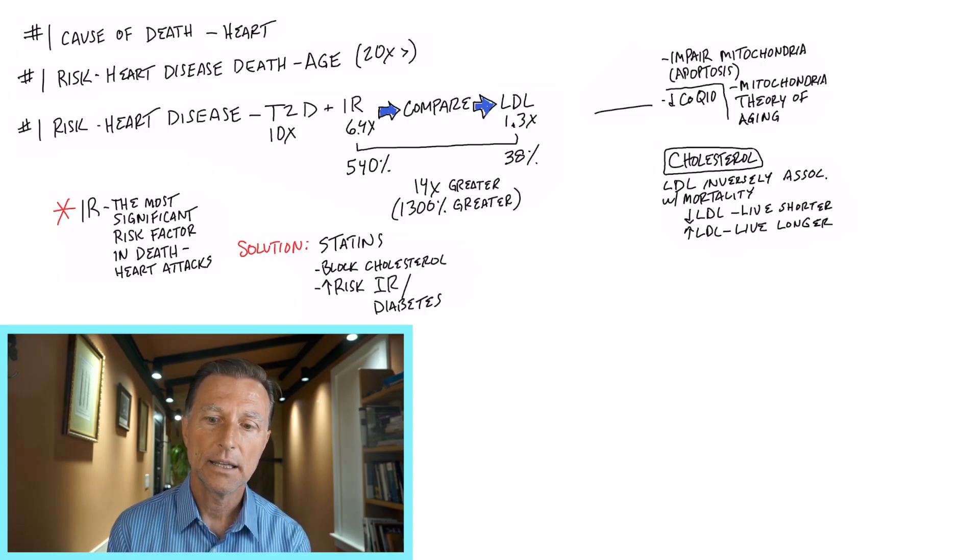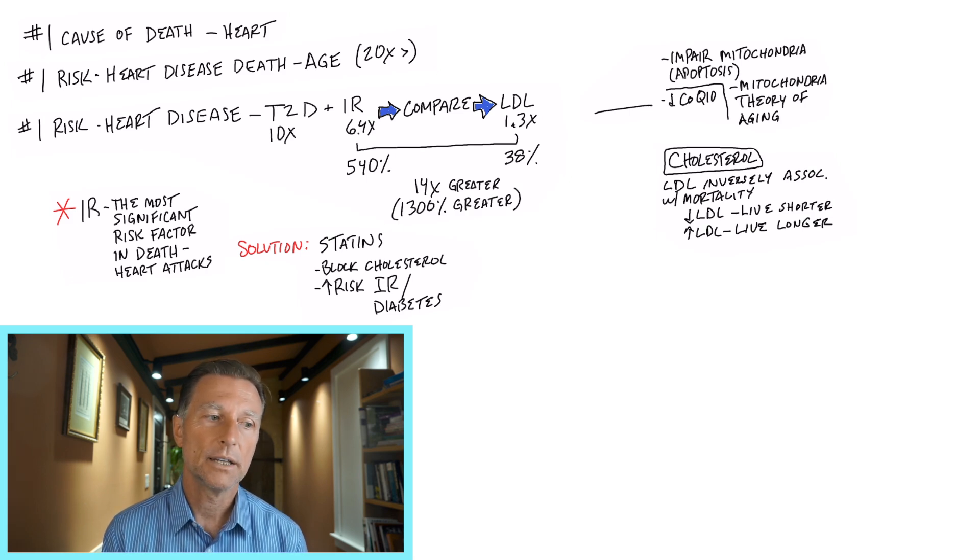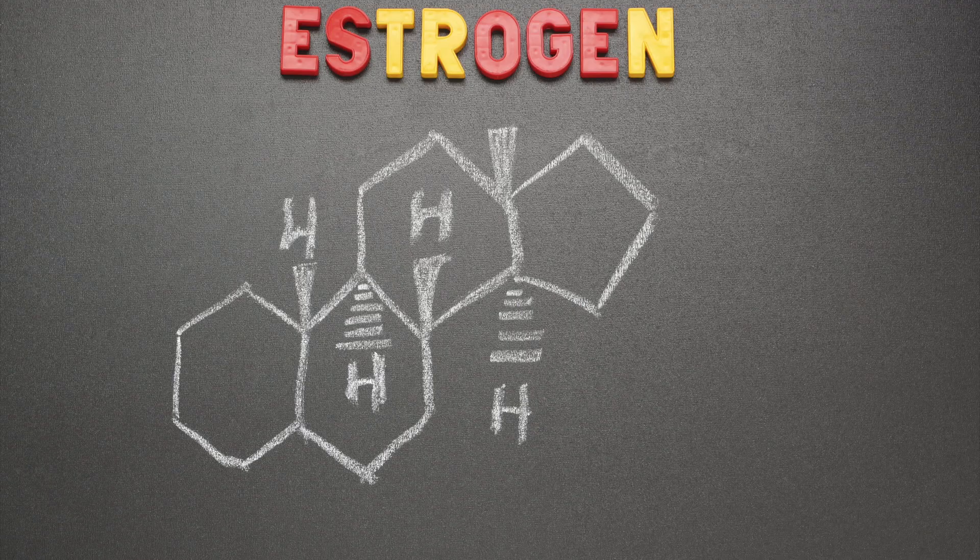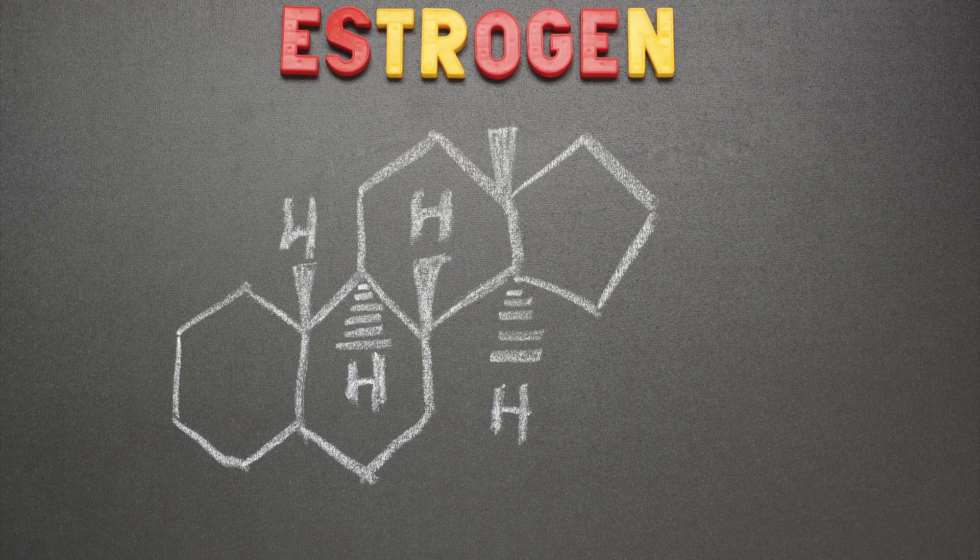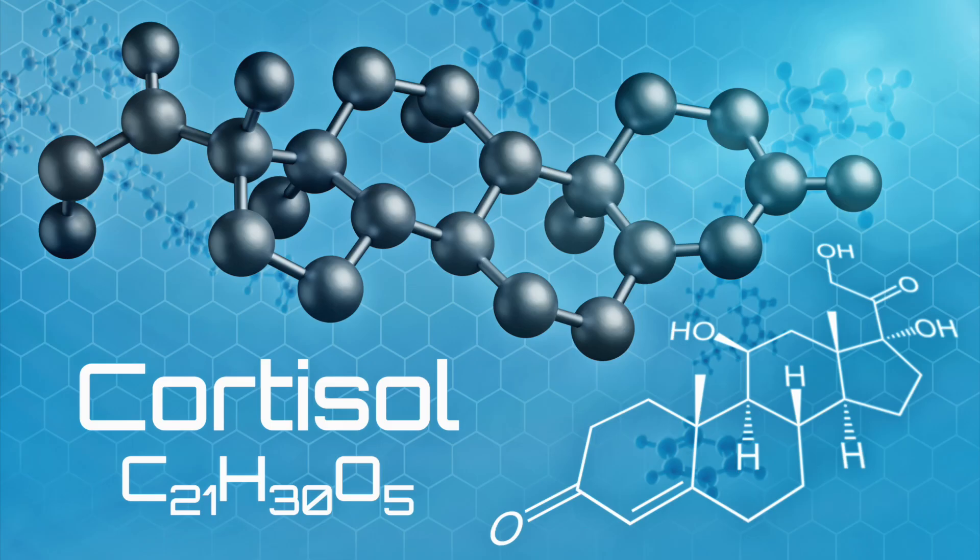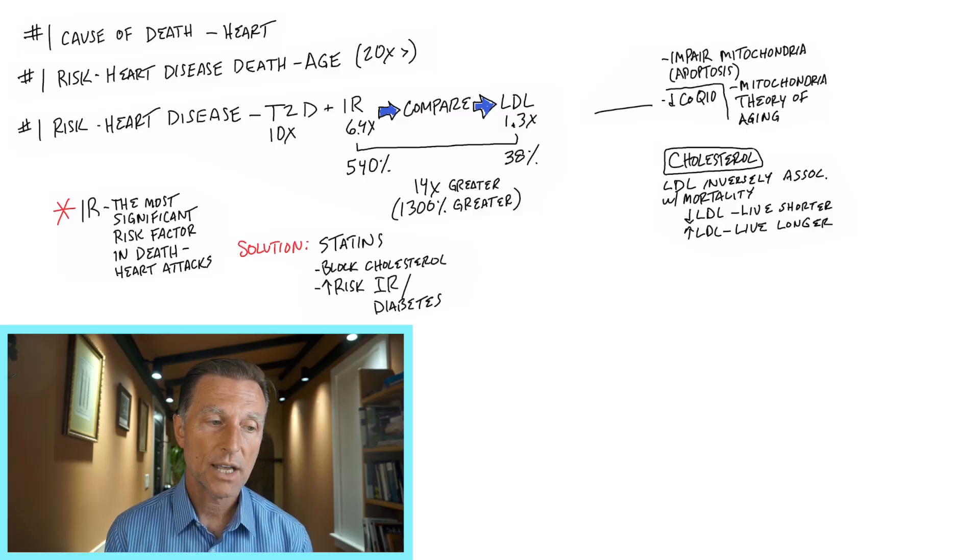But it's also involved in making hormones, especially testosterone, especially estrogen, and cortisol, the hormone that we need to counter stress and get rid of inflammation.